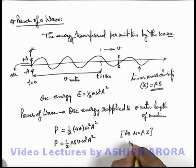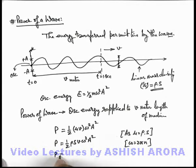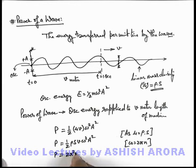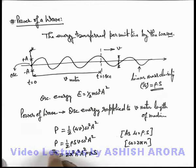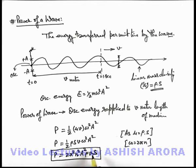Here omega can also be written as 2 pi n, where n is the oscillation frequency. So if we write it as 2 pi n, this becomes 2 pi squared n squared A squared rho v S. This is the expression we use for the power of a wave — the power of a simple harmonic wave having amplitude A and frequency n, propagating in a medium of density rho with speed v, where S is the cross-sectional area of the medium taking part in wave motion.